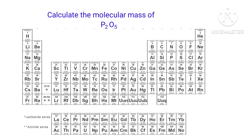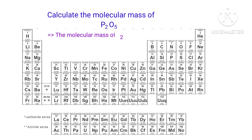In P2O5 there are 2 phosphorus atoms and 5 oxygen atoms present. So the molecular mass of P2O5 is 30.974 x 2 plus 15.999 x 5. That equals 93.946 grams per mole.